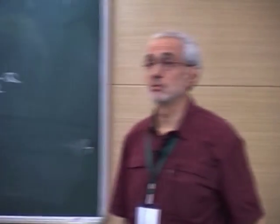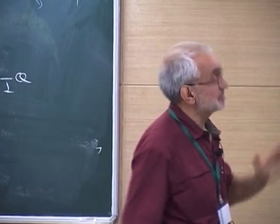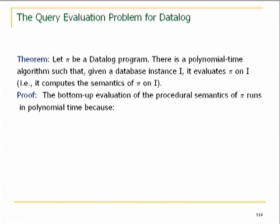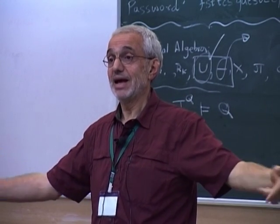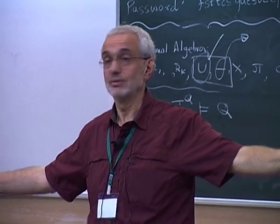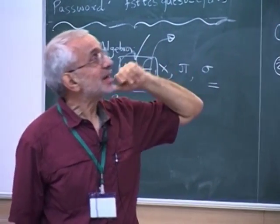This is a very special case of the same argument used to give meaning to least fixed point logic. For every fixed program — data complexity — the bottom-up evaluation can be carried out in polynomial time. The number of iterations is bounded by a polynomial in the size of the database (the degree is the arity of the recursive predicate). Every step can be carried out in polynomial time because we do a relational algebra evaluation on a fixed query. Polynomial times polynomial gives polynomial.